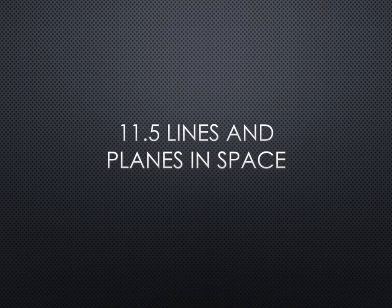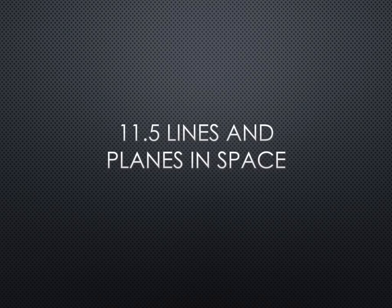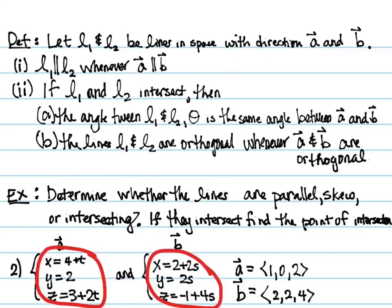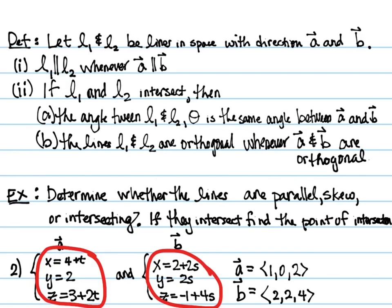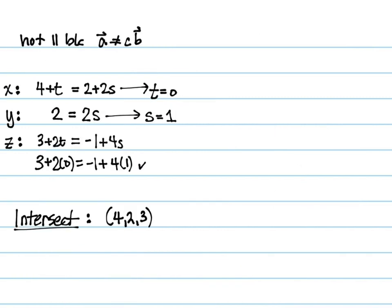Last time we started section 11.5, which is lines and planes in space, and we had gotten to the point where we had looked for where planes intersect. In particular, we were trying to decide whether they were parallel or they intersected, and if in fact they intersected, finding the point of intersection. If you'll remember when we did that, we first verified that they weren't parallel, and then we assumed that they intersected and looked for an intersection point. Since we found an intersection point, we know they did intersect, and had we not been able to find an intersection point, then we would have known that they were skew.